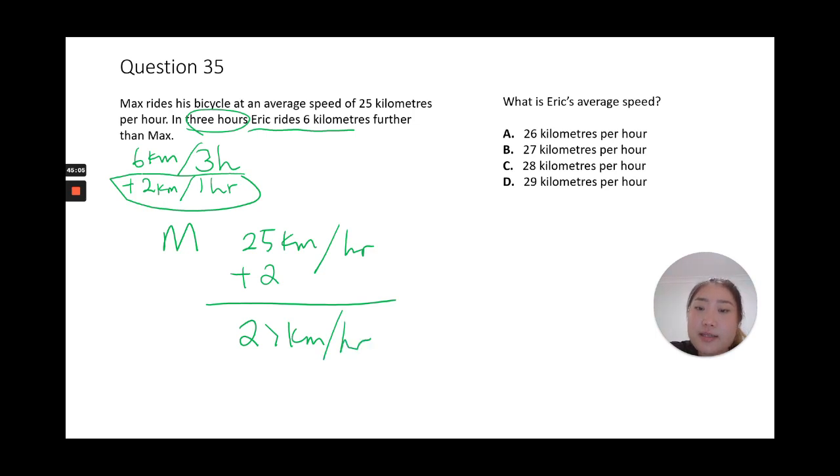So all we're going to do is add those two kilometers, so we get 27 kilometers per hour as our answer. Eric will ride 27 kilometers average per hour for three hours. B is your answer.